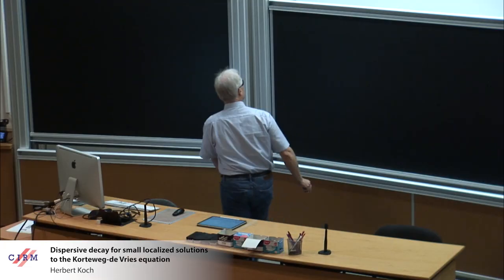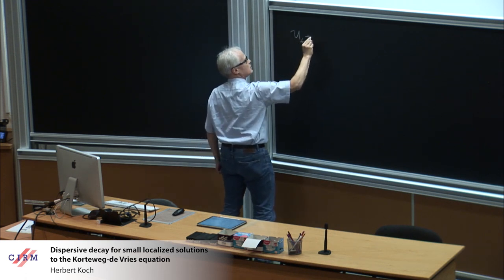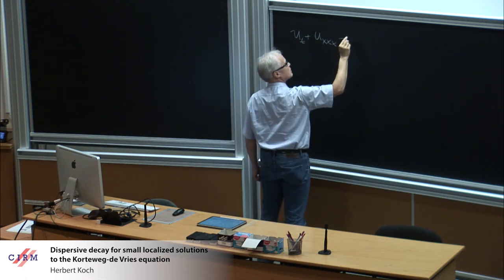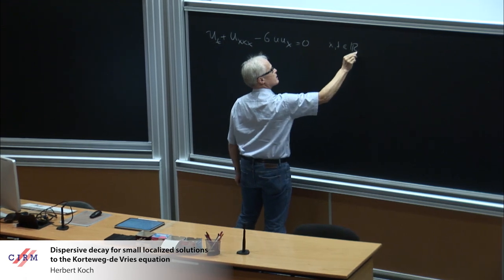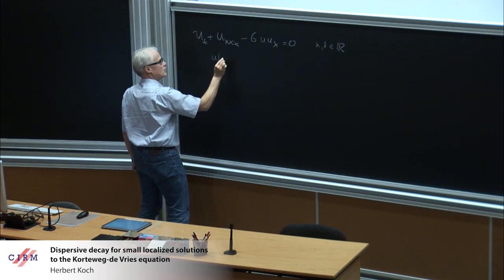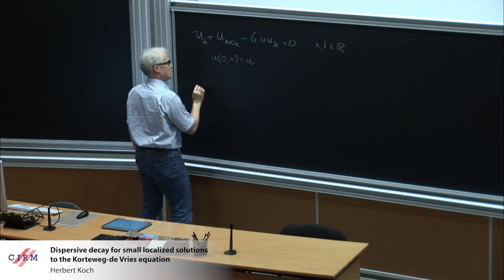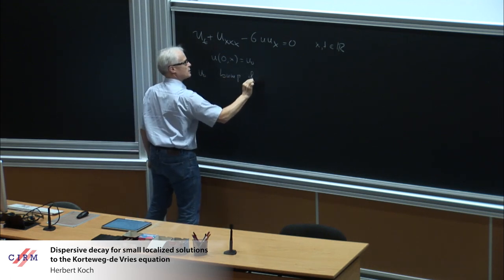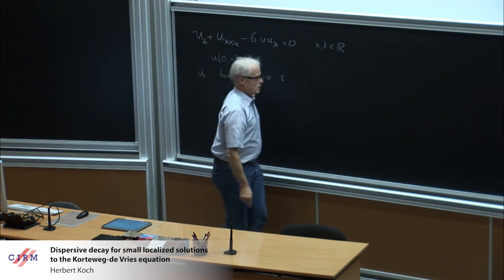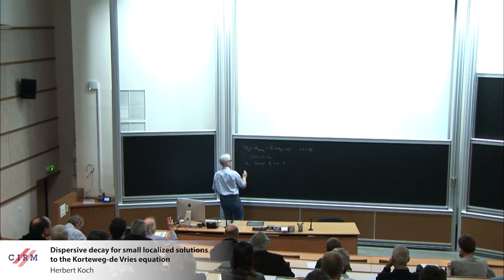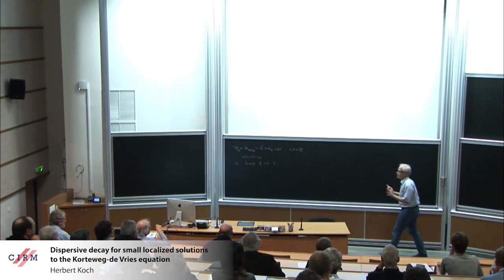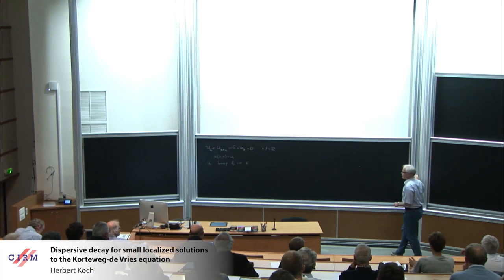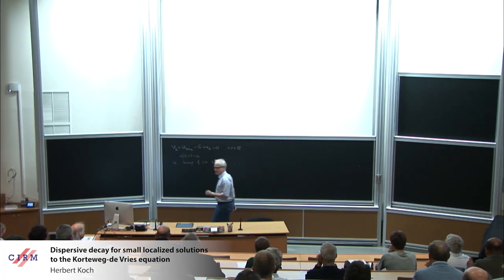Now, I want to talk on a very classical problem, a very simple-minded question. Look at the Korteweg-de Vries equation equal to zero, so x and t are real numbers. Then you prescribe initial data, u of zero x is equal to u zero, and u zero is a bump function of size epsilon. I hope this will become clearer later on.